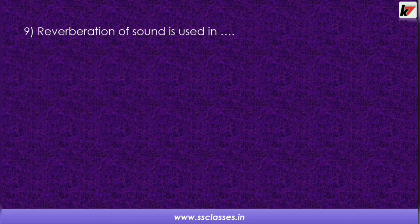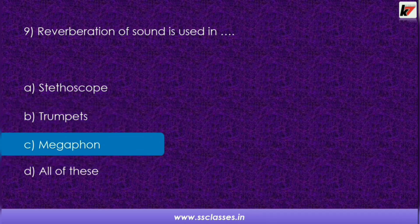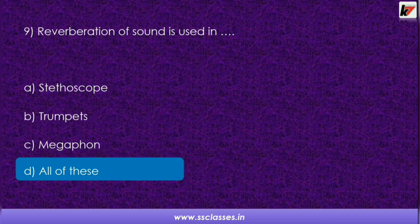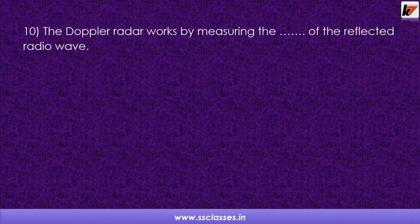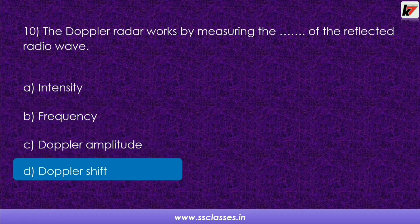Question 9: Reverberation of sound is used in? Options are: stethoscope, templates, megaphone, or all of these. The correct answer is all of these, because reverberation of sound is used in all these applications. Question 10: Doppler radar works by measuring which property of the reflected radio wave? Options are: intensity, frequency, Doppler amplitude, or Doppler shift. The correct answer is Doppler shift.